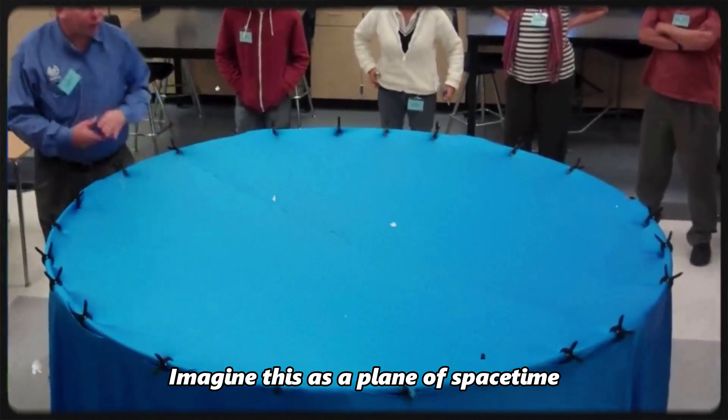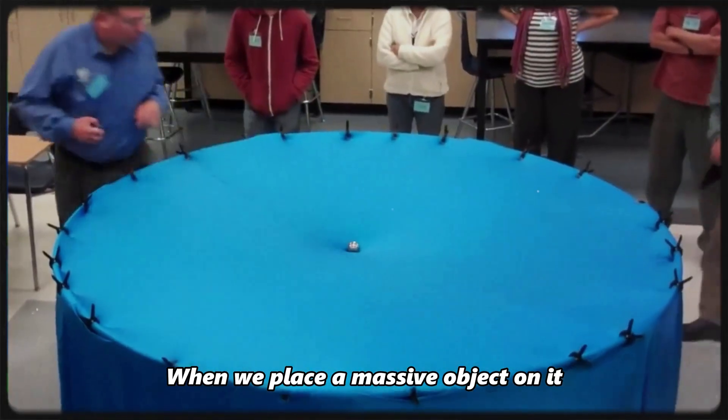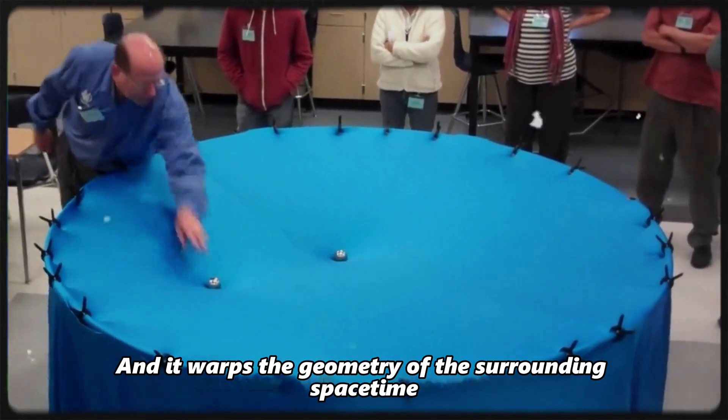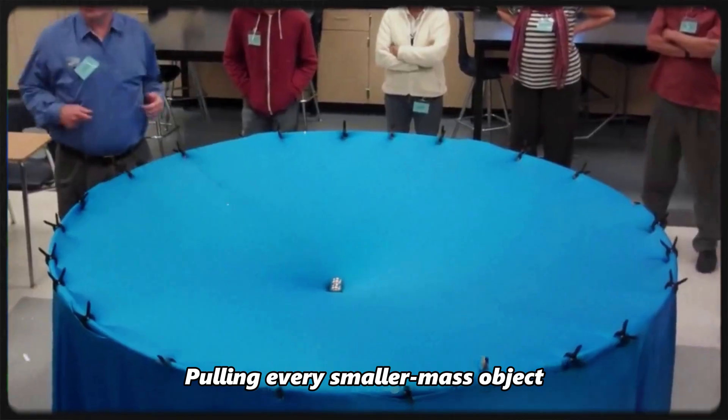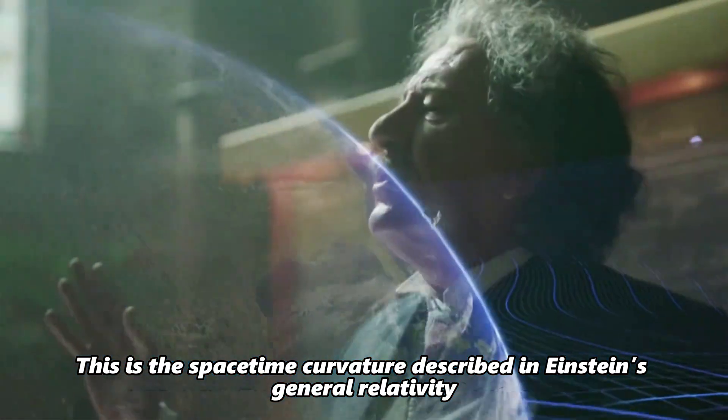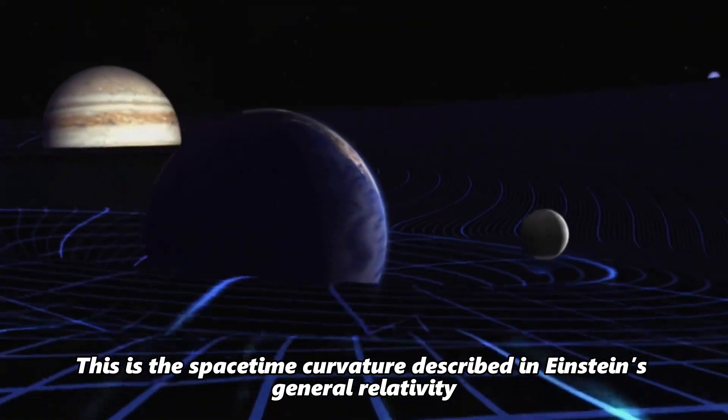Imagine this as a plane of spacetime. When we place a massive object on it, we'll see the plane start to sink downward, and it warps the geometry of the surrounding spacetime, pulling every smaller mass object toward its center until they eventually collide. This is the spacetime curvature described in Einstein's General Relativity.